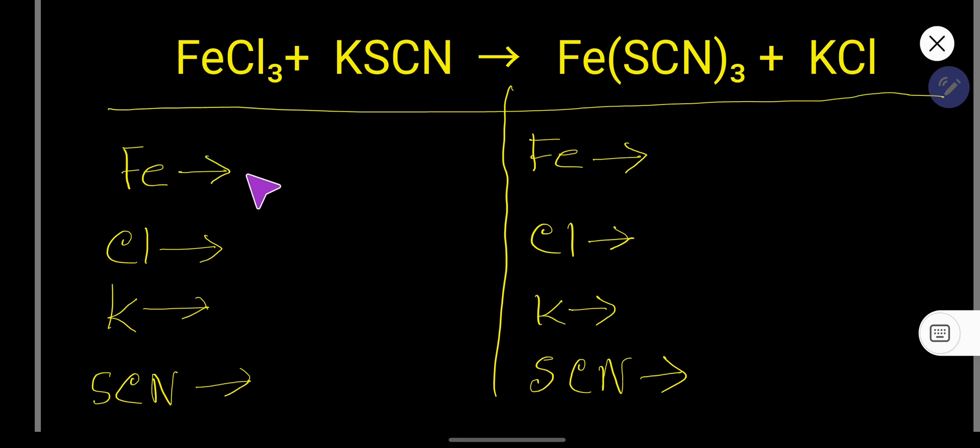In the left hand side we have iron, that is 1, then chlorine, 3, then potassium, 1, and SCN is a polyatomic ion, this is called thiocyanate, and this is 1.